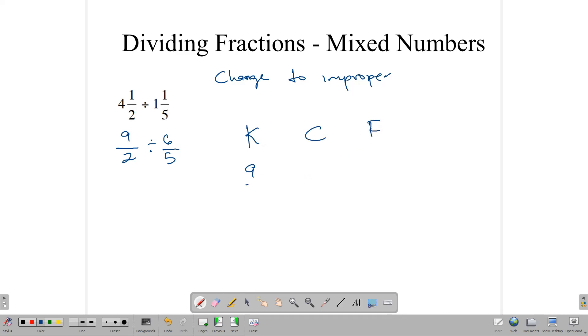So, we keep this one. We change this division to multiplication. And we flip this one. Now, we can have it as 5 times 9 divided by 2 times 6. 5 nines are 45. And 2 sixes are 12. We can simplify this question. This is our answer.